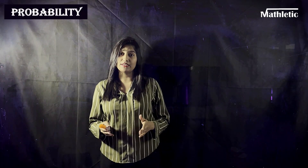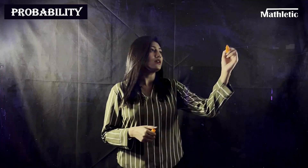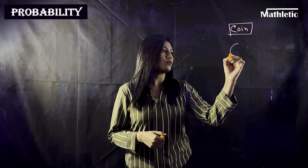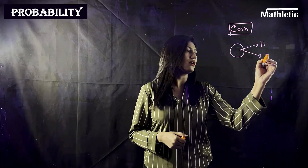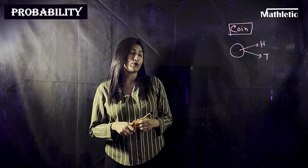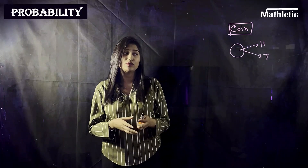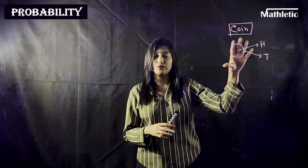Hello everyone. In this video I will be discussing probability — basically the possibility of whether an event will happen or not. Let me start with a very common example: suppose you are dealing with a coin. In that case you might get a head or a tail. Probability will give you a value that indicates how likely it is to get a head or a tail.